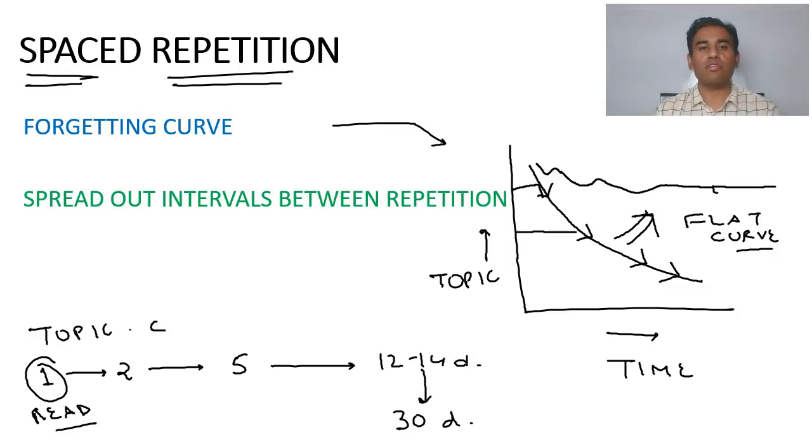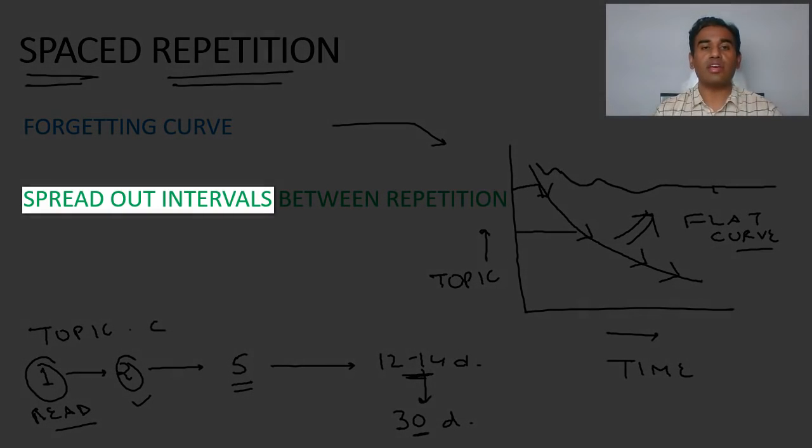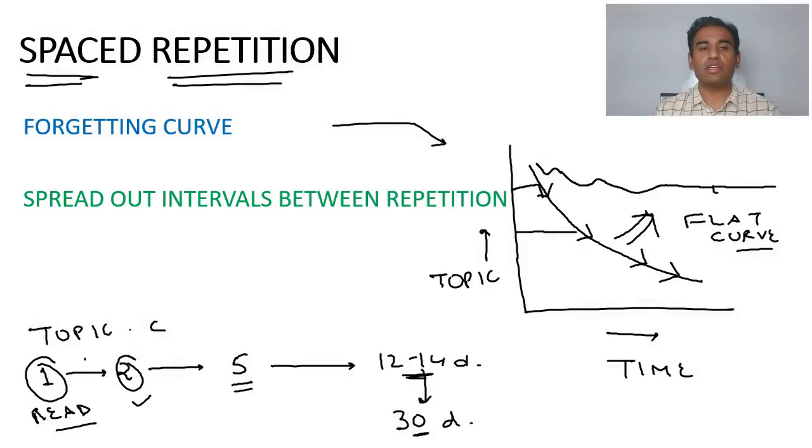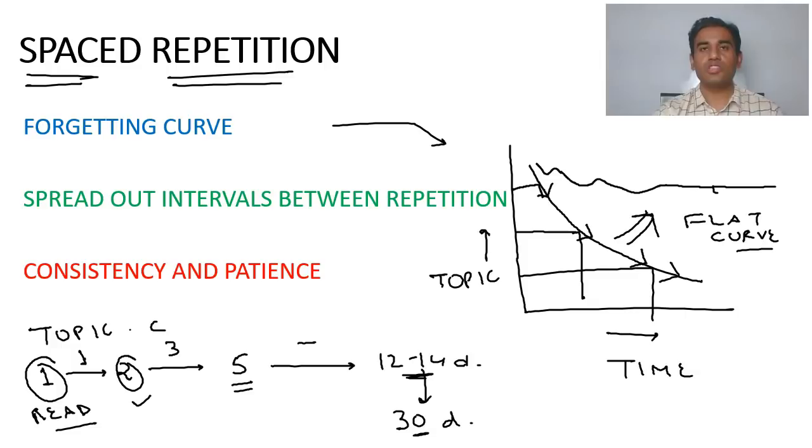Now on the next day if I ask you to revise it, then obviously it is going to be very simple because just yesterday you have understood that topic. Then obviously the subsequent revisions are going to take very less amount of time. This is your spaced repetition. The thing is you have to spread out your intervals. The intervals are going to be increased. First interval was just one day, other interval is longer. Next interval is of 3 days and subsequently the interval time is being increased. The science behind it, you are interrupting your forgetting curve to make it from going down to a flat sort of curve, so the information remains in your brain forever. So this was your spaced repetition, which again needs consistency and patience.